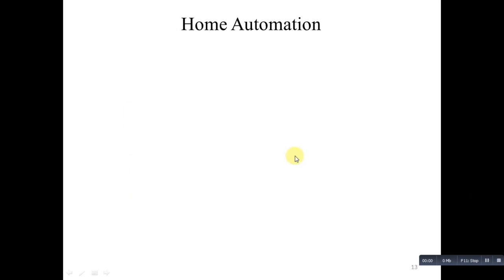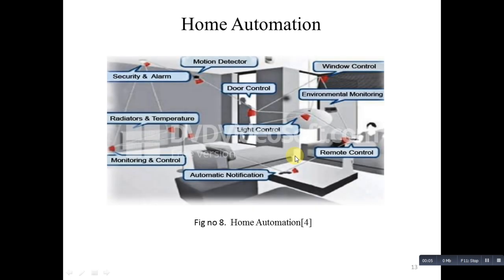The next application of wireless sensor network is Home Automation. It involves control and automation of home appliances such as lights, air conditioning, and home security. In the given figure, it consists of many sensors which sense environmental conditions such as temperature and light, and it also provides automatic notifications. We can consider this a smart home.